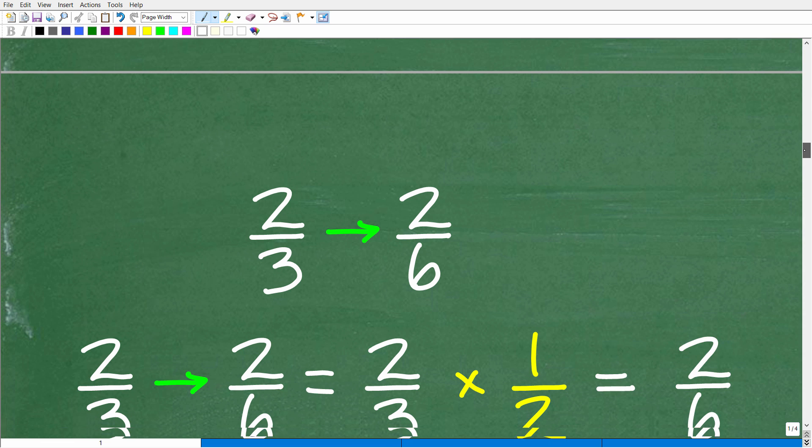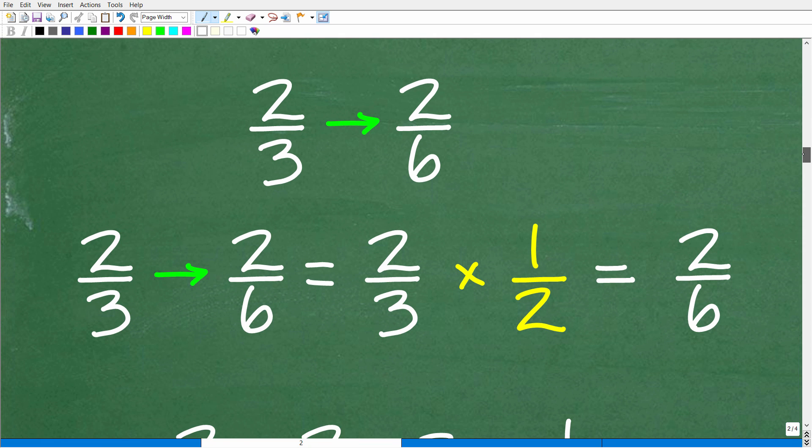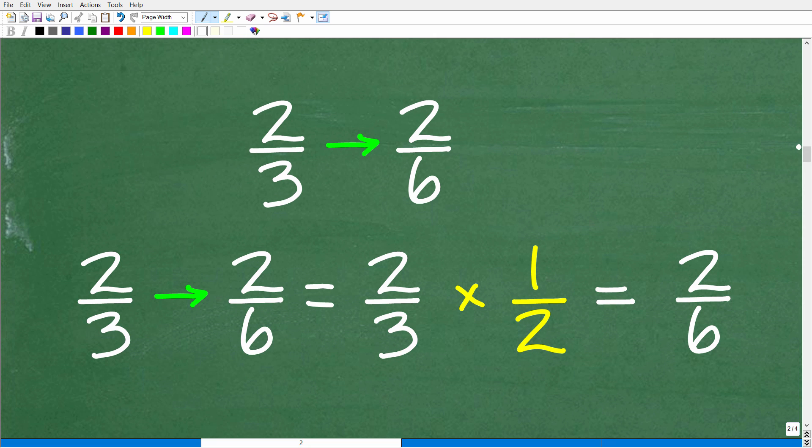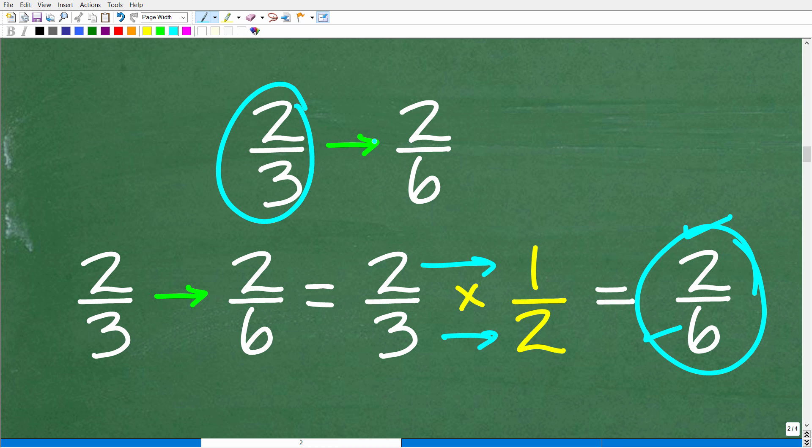Now, there is another way to go from a two-thirds to a two-sixths as well because we can multiply. So some of you might have kind of looked at this pattern and thought, well, we can multiply by one-half, and that's fine as well because two-thirds times one-half, when we multiply fractions, we multiply the respective numerators and denominators. So two times one is two, and three times two is six. So to go from a two-thirds to a two-sixths, we could multiply by one-half.